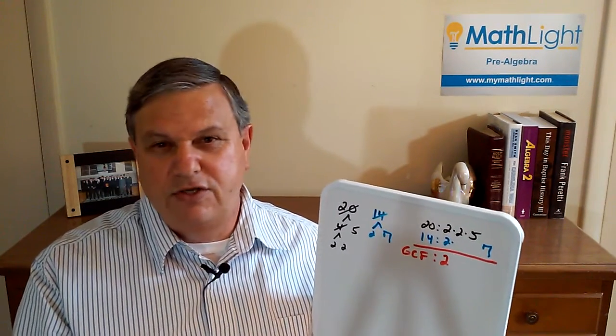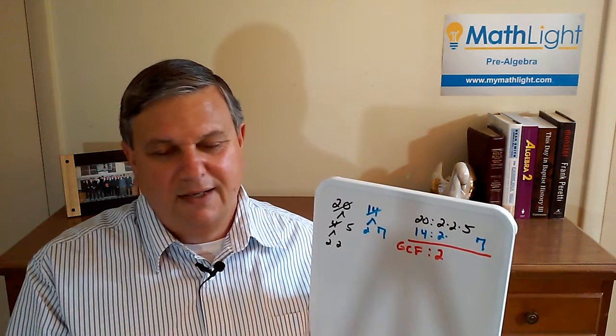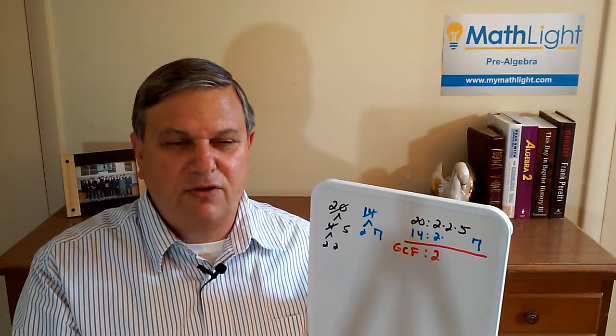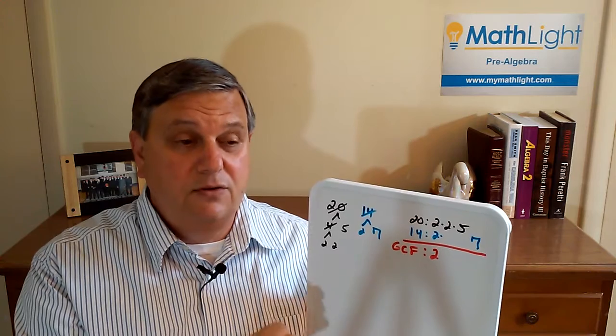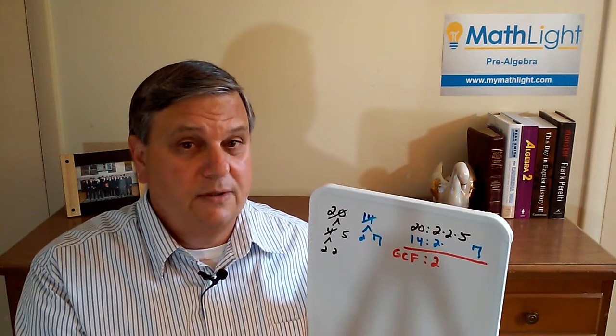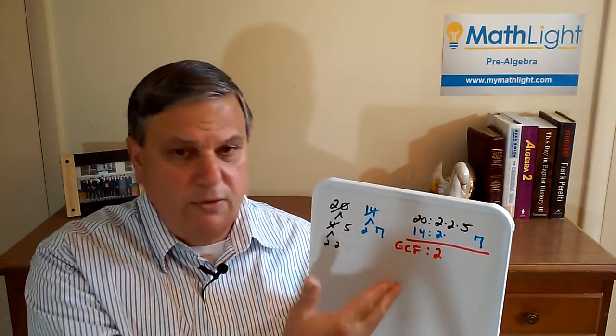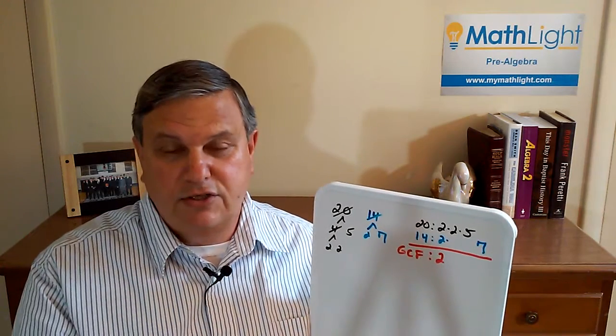So they both have a two, but that's the only factor that these two numbers happen to have, and so of course the GCF is two. Now, once you teach them on something simplistic, then we can go on to more complex numbers, but really all they're doing then is reading the intersection.